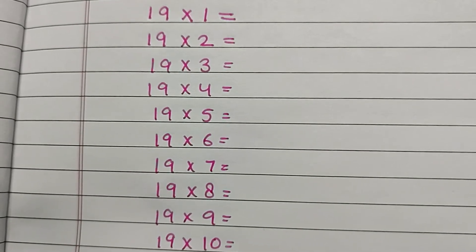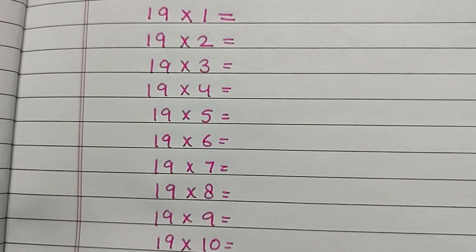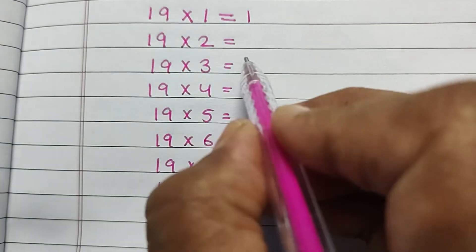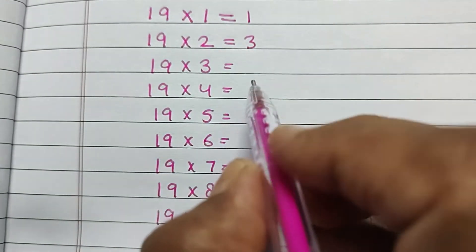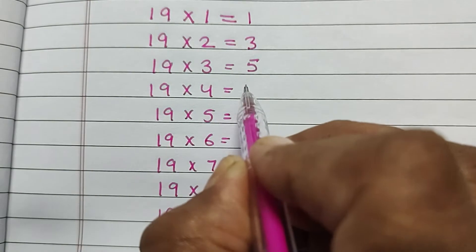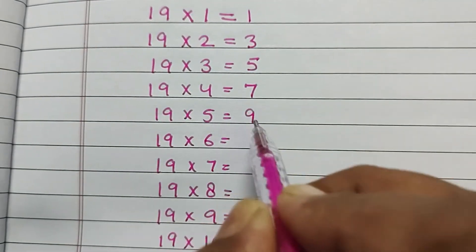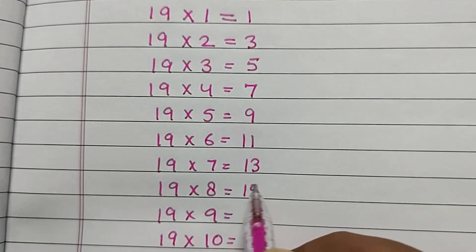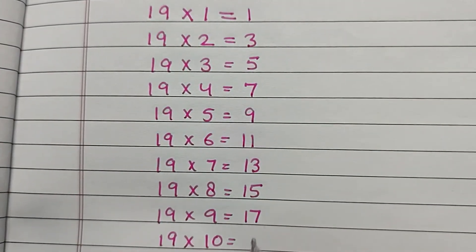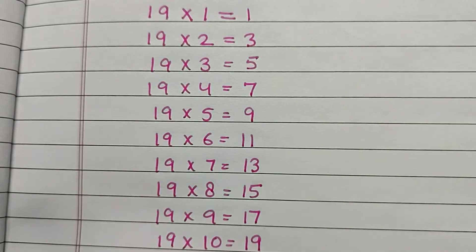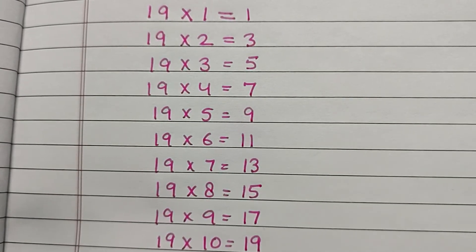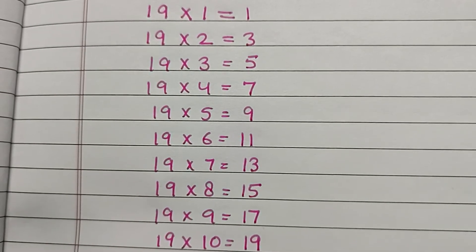Now what we have to do is write the numbers starting from 1, but alternate numbers. So we write 1, 3, 5, 7, 9, 11, 13, 15, 17, and 19. Or we can say we have to write odd numbers from 1 to 19.